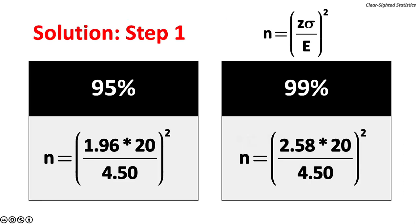Step one, enter the data into the formula. For the 95% confidence level, z equals 1.96. For the 99% confidence level, z equals 2.58.